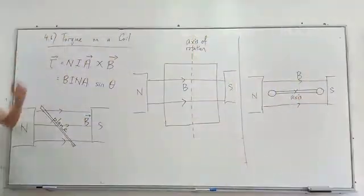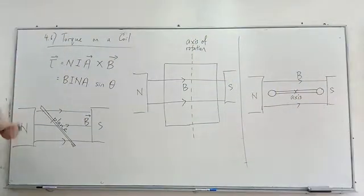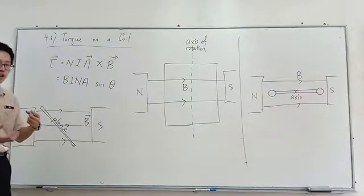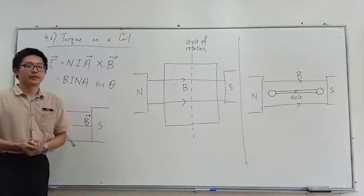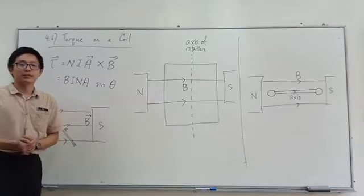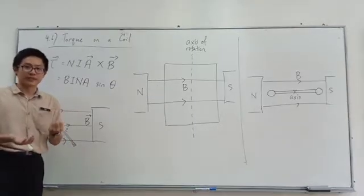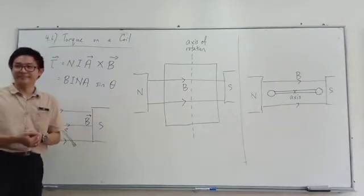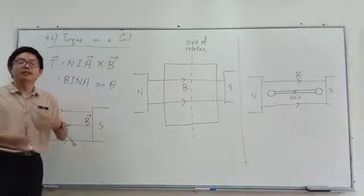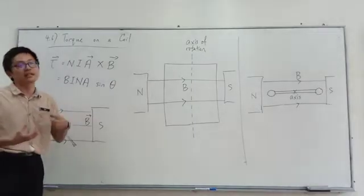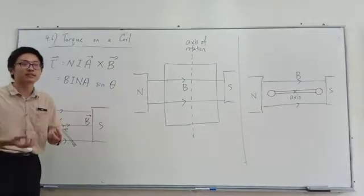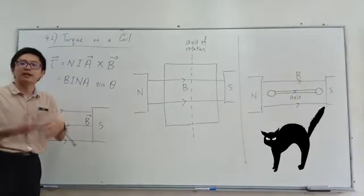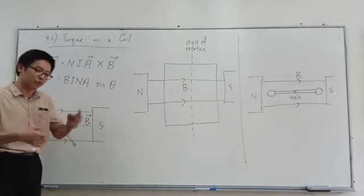Now 4.6 is talking about torque on a coil. You learned about torque before — torque makes something rotate. Torque is actually like a force making something rotate.